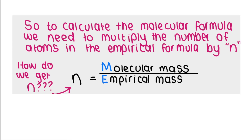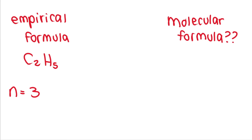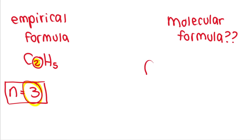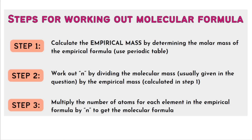We calculate n by taking the molecular mass — which is often given in the question — and dividing it by the empirical mass. The empirical mass comes from the empirical formula. So if n is three and your empirical formula is C₂H₅, to work out the molecular formula you multiply each number by n: two times three is six, giving C₆, and five times three is fifteen, giving H₁₅. That becomes your molecular formula.